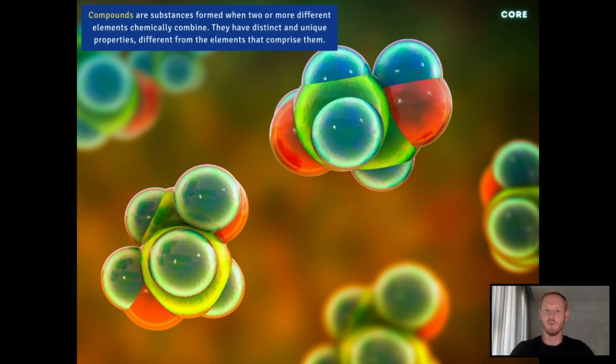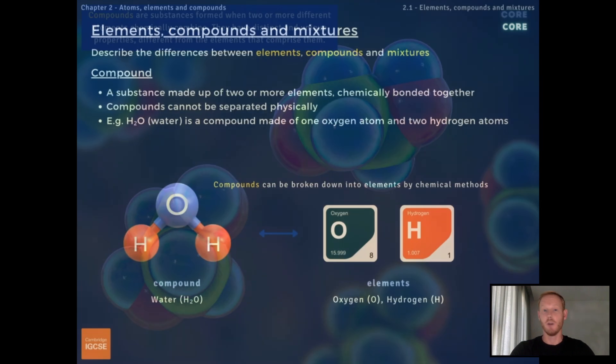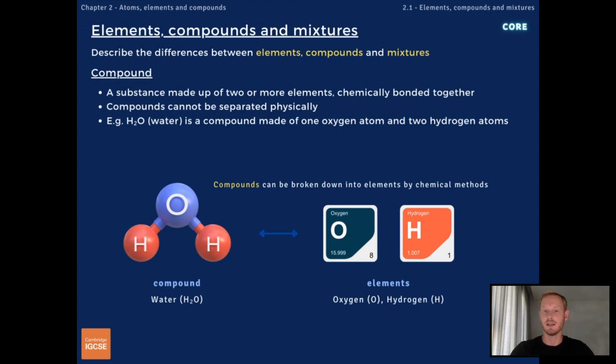So compounds are substances formed by the chemical combination of two or more elements in fixed proportions. They have their own unique properties that are different from the elements that comprise them. Compounds cannot be separated physically, but can be broken down into elements by chemical methods. Compounds are represented by chemical formulas like NaCl for sodium chloride and H2O for water. A water molecule is made of two hydrogen atoms covalently bonded to a single oxygen atom.